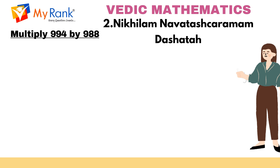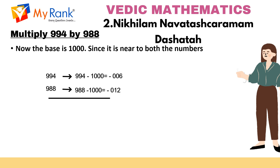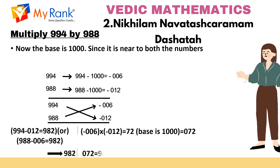Example 3: multiply the number 994 by 988. Here the base is 1000 since it is near to both the numbers 994 and 988. So 994 minus 1000 equals minus 6, and 988 minus 1000 equals minus 12. Now the left hand side of the answer: we need to subtract the numbers crosswise, that is 994 minus 12 equals 982, and 988 minus 6 equals 982. Hence 982 is the left hand side. The right hand side: multiply vertically, minus 6 into minus 12 equals 72. The combined answer is 982072.